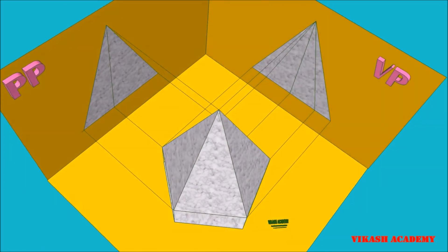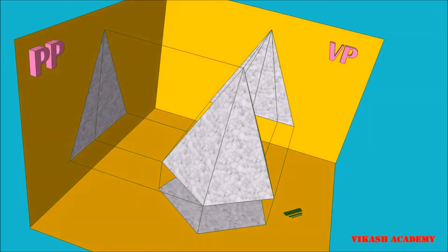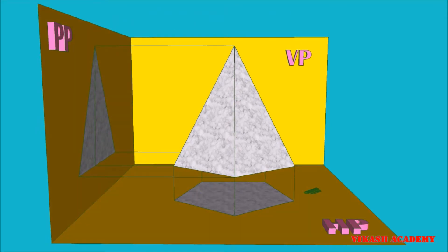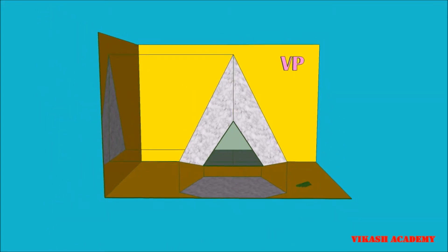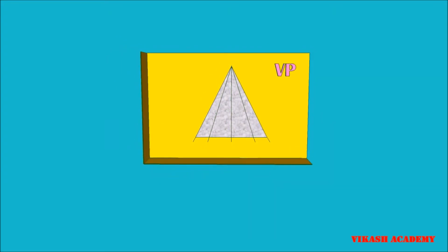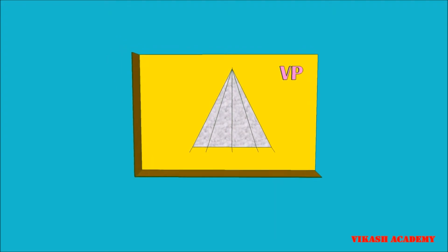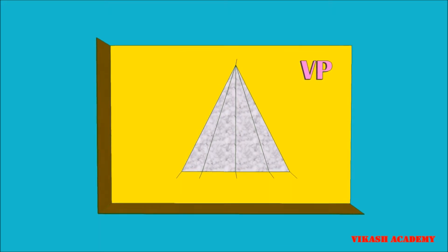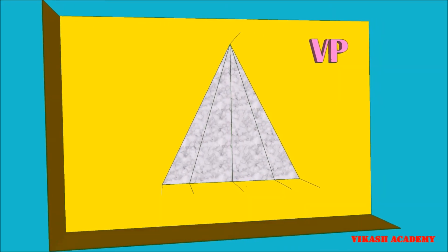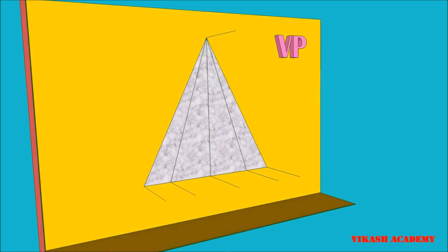When we observe this object from the front side, we are able to see a triangle along with three extra lines. This triangle is obtained due to the projector lines drawn from the pentagonal base of this pentagonal pyramid, as well as the apex — the top — of this pentagonal pyramid, to the vertical plane.